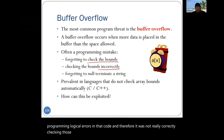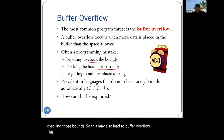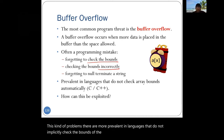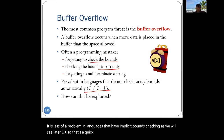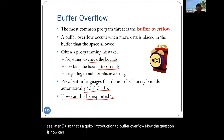These kinds of problems are more prevalent in languages that do not implicitly check the bounds of the array at runtime, for example C and C++. It is less of a problem in languages that have implicit bound checking, as we'll see later. That's a quick introduction to buffer overflow. Now the question is how can this buffer overflow be exploited to launch an attack?